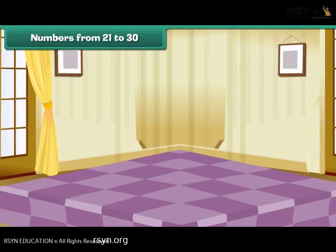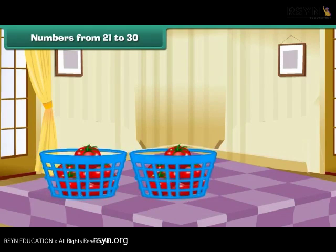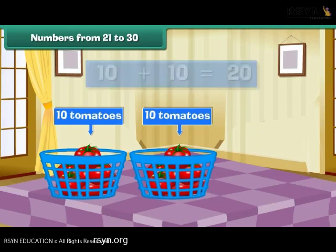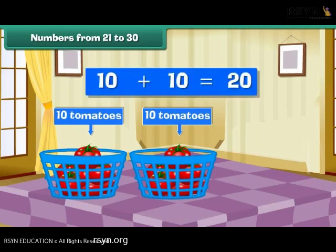Numbers from 21 to 30. Look at these two baskets of ripe tomatoes. Each basket contains ten tomatoes. Therefore, we have two groups of ten, which means we have 20 tomatoes.